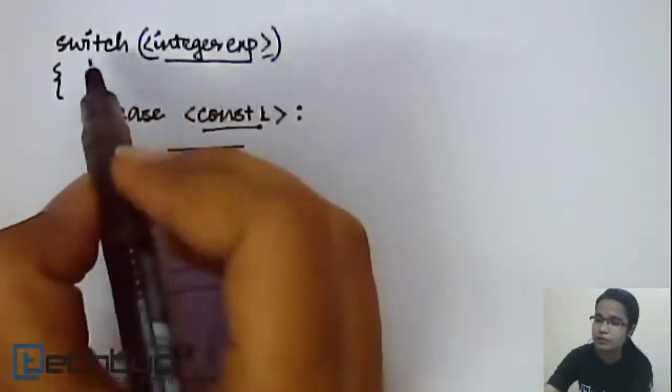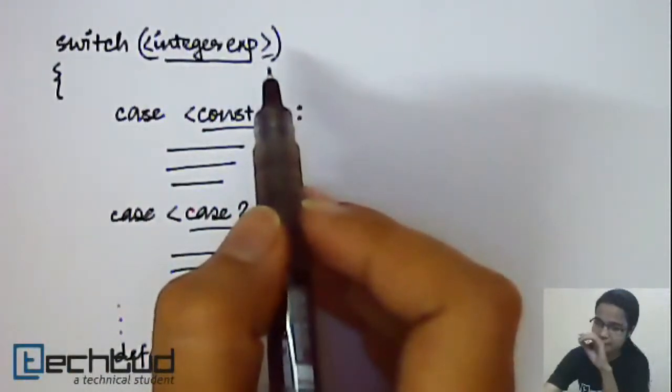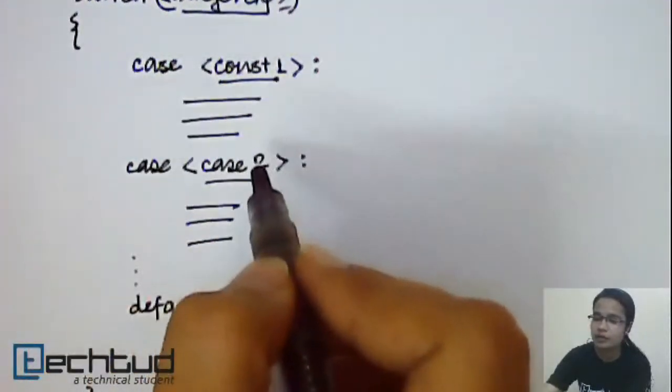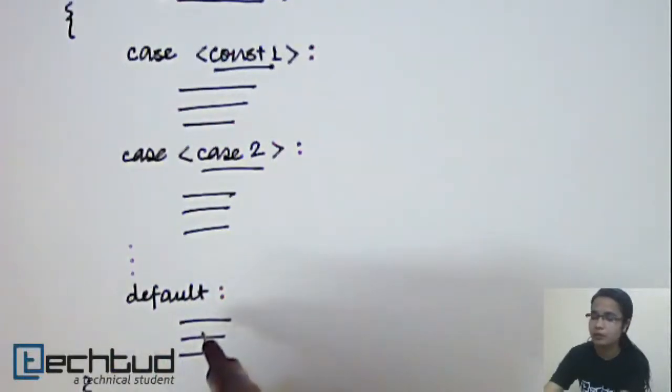So, revise once: switch, then within a pair of parenthesis, you write your integer expression, then in a pair of braces, you write your cases with constant values and finally you write your default statement.